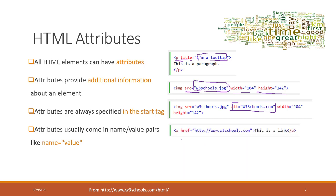For the A tag, we have the HREF attribute, which provides the URL of a link — so that when you click the link, the browser knows where to direct you.